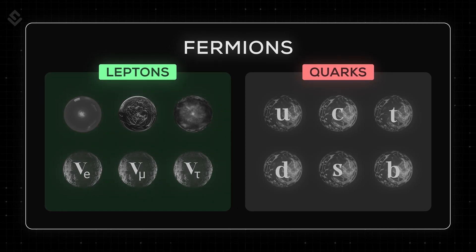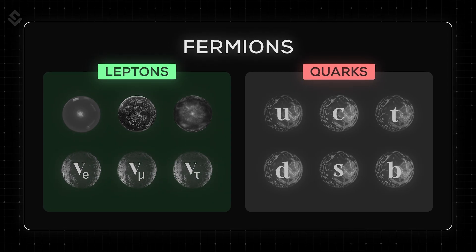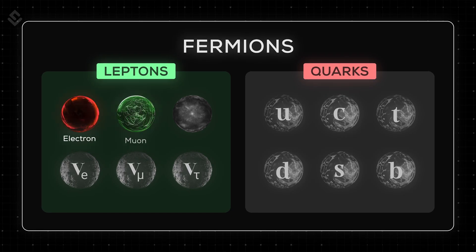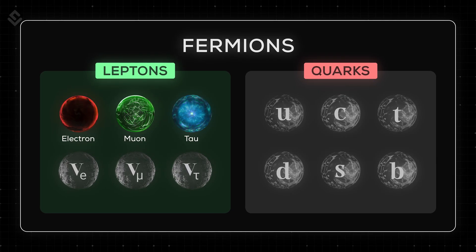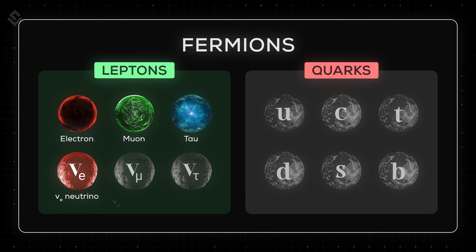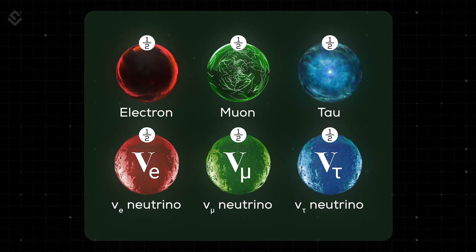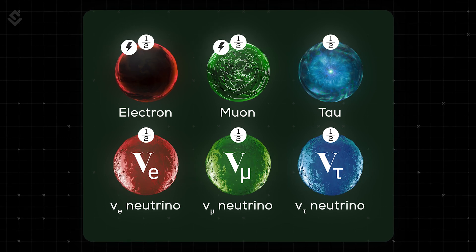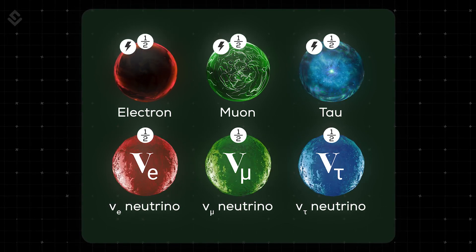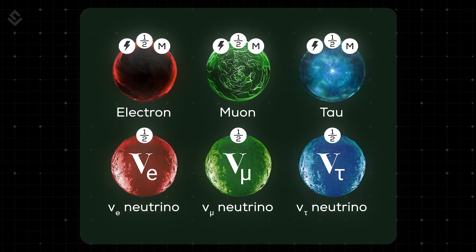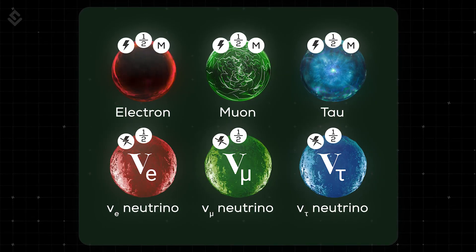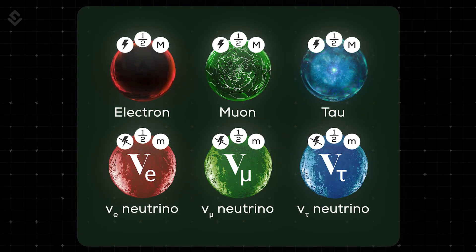Leptons are elementary particles that are further divided into six types: electrons, muons and tau, and their neutrino counterparts: electron neutrino, muon neutrino and tau neutrino. They all have a spin value of 1/2. The electron, the muon and the tau all are electrically charged and have a sizeable mass, while the neutrinos are neutral in charge and have very little mass.